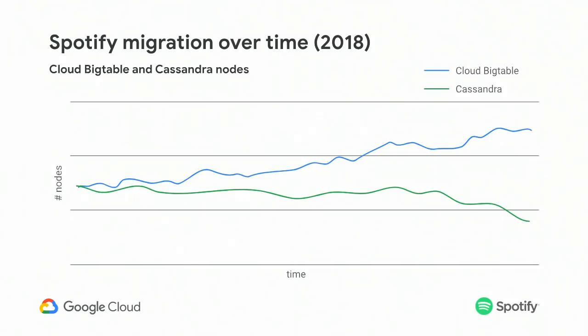Those two features are now available and we use them. The migration is going slowly — we are about halfway. We see the number of Bigtable nodes increasing and the number of Cassandra nodes decreasing.